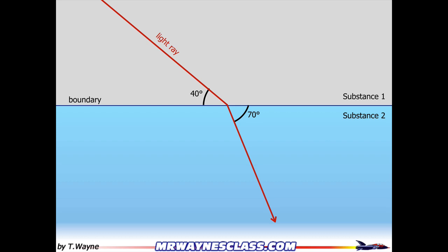So what I need to do here is draw a line that's normal to the boundary line at the point where the light ray is refracted. So here's my normal line, it's 90 degrees to the boundary.